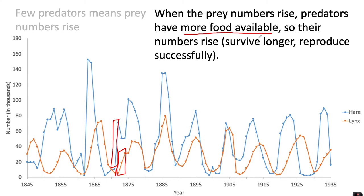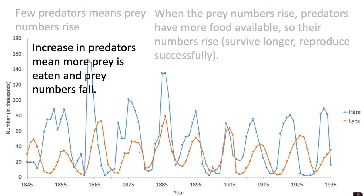Their numbers rise because they are surviving longer and are able to reproduce successfully because of all that food that is now available. However, an increase in predators means that more prey is being eaten, and you'll notice at this point here these prey numbers will start to fall because those predator numbers had got quite high.